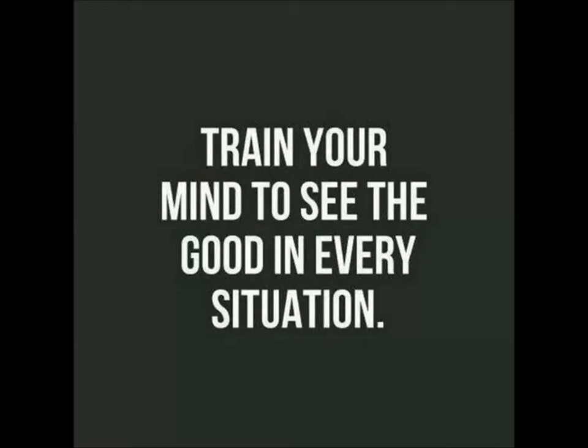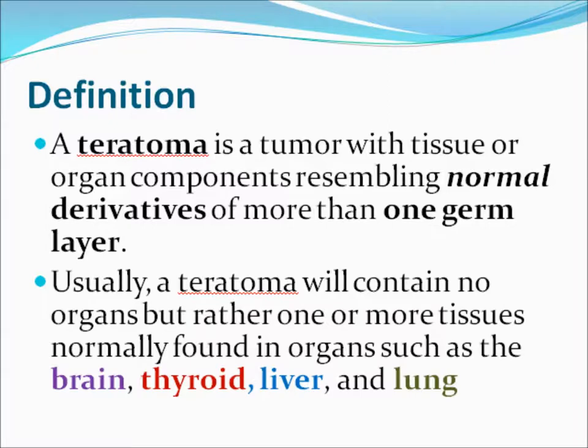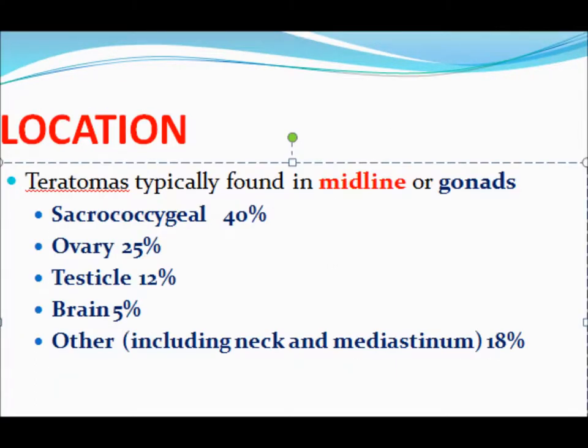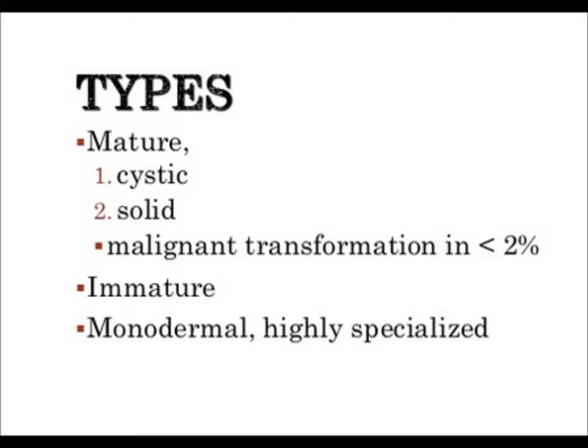First, to review the important features: by definition, teratoma is a tumor composed of derivatives of more than one germ layer. They usually don't have to show the presence of organs, but tissue from all other organs. They are typically found in midline or gonads. The ovary is the common site in females. There are three types: mature, immature, and monodermal.